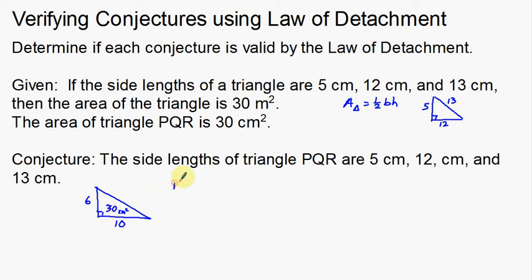So this is not valid — this is actually a not valid statement. Why is it not valid? I came up with what's called a counter-example: a different example where the area is 30 centimeters squared, but the side lengths are not 5, 12, and 13. My side lengths are 6, 10, and then whatever the third side would be. The third side is irrelevant because it's not going to help us find the area.